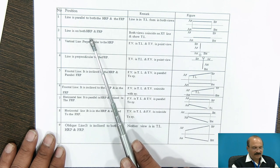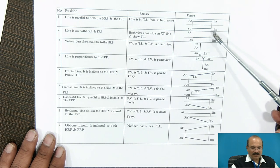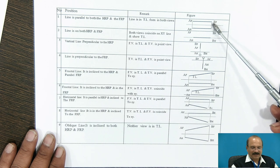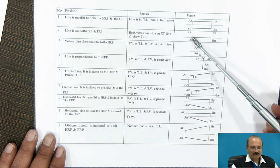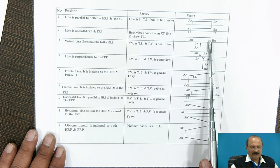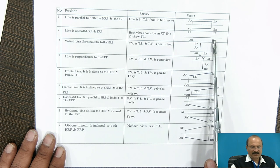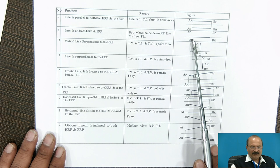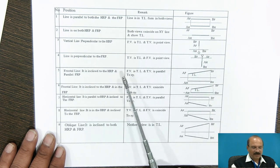The next one is, the line is on both HRP and FRP. The distance above the horizontal plane or in front of the vertical plane is going to become zero. So the line is coming on the XY line only. You can represent this line as A_H, B_H here — this is nothing but A and B, or A-dash and B-dash.